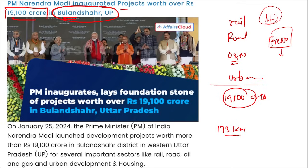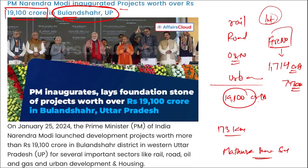An integrated industrial township at Greater Noida was launched, to be built at a cost of Rs 1,714 crore on 747 acres of land. PM Narendra Modi also renovated the Mathura sewage scheme, under which a new sewage treatment plant worth Rs 460 crore will be built.